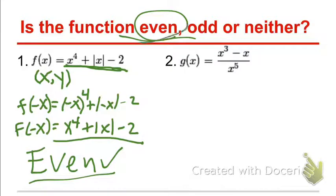Even functions have a lot to do with even exponents — an even exponent turns a negative input into a positive output. But just because all of the exponents are odd, like in example 2 where you have a 3, a 1, and a 5, doesn't mean the function is odd. Let's apply the same method to number 2 and see what happens. You always test even and odd symmetry the same way — start by plugging in negative x for x.